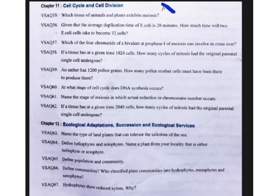From the eleventh chapter, Cell Cycle and Cell Division, no very short answer and no SAM questions will be coming, so you do not need to prepare it. If you are very interested you may go ahead. Coming to the thirteenth chapter, Ecological Adaptations, only few answers are there and one very short answer will be coming.